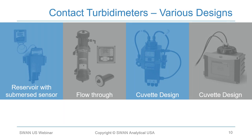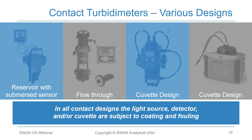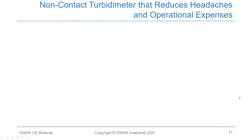There are different contact turbidimeter designs — reservoirs with submerged sensors, flow-through designs, and cuvette designs — but in all contact turbidimeter designs, one component such as the lens, cuvette, light source, or detector is in direct contact with the sample matrix and subject to coating and fouling. Swan uses a non-contact turbidimeter where the light source and detector never contact the matrix, avoiding fouling due to things like iron and manganese. When the detector or cuvette is in direct contact, it must be cleaned periodically to address iron and manganese staining, which can be a huge issue for plant personnel — but this isn't an issue with the Swan turbidimeter.